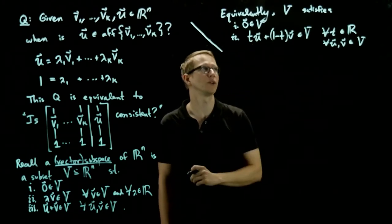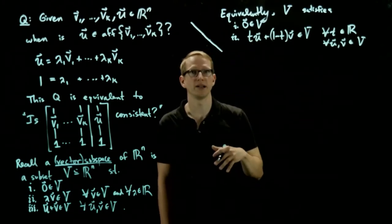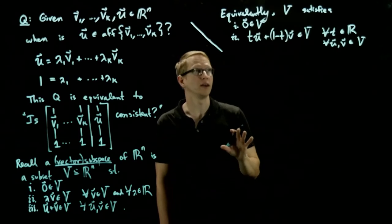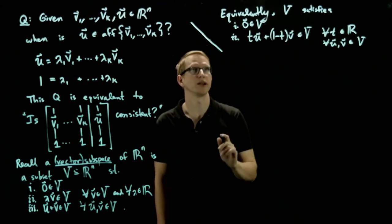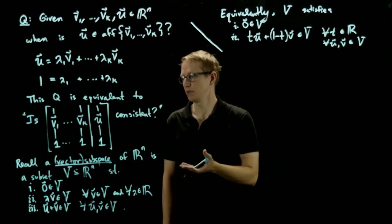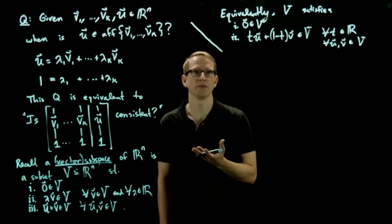Now the fact that we've written it this way allows us to define an affine subspace in a much more closely related fashion to this definition because for an affine subspace we'll only be able to combine vectors in an affine way.